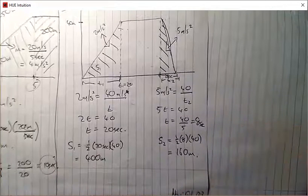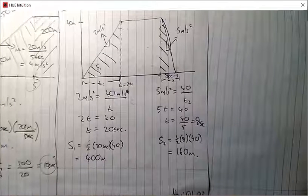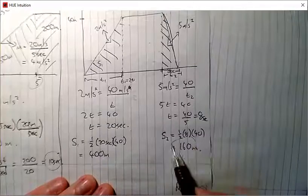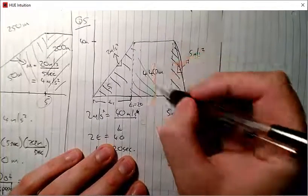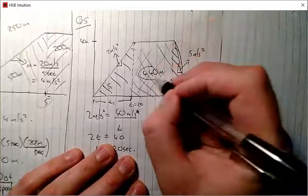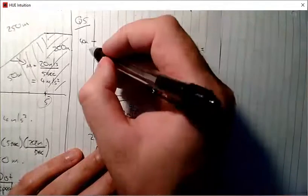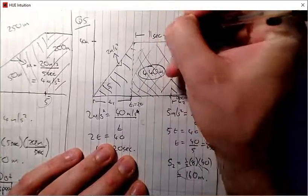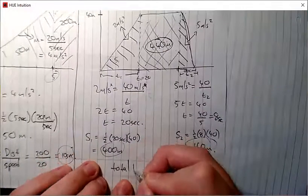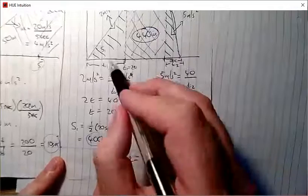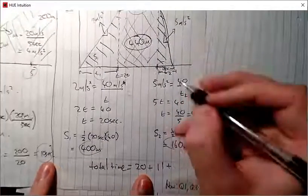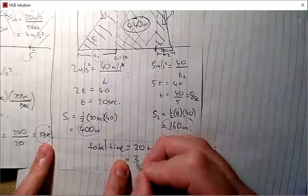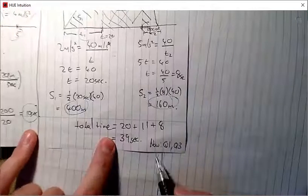The entire journey is one kilometer (1000 meters). s₁ plus s₂ is 560 meters, leaving 440 meters for the constant-speed section. That section is a rectangle with height 40, so the width (time) is 440 ÷ 40 = 11 seconds. Total time: 20 seconds accelerating plus 11 seconds at constant speed plus 8 seconds decelerating equals 39 seconds.